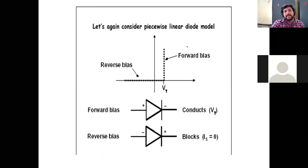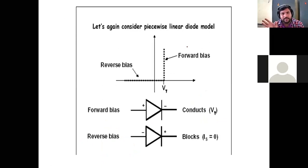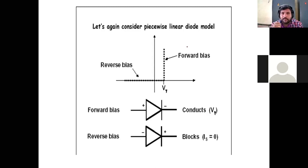The next topic is the piecewise linear model of the diode. A PN junction diode has two terminals and works with forward bias and reverse bias. Under forward bias, the diode conducts — it acts like an ON switch, which is a short circuit. Under reverse bias, the diode does not conduct — it acts like an OFF switch, which is an open circuit.